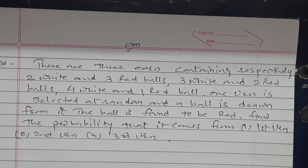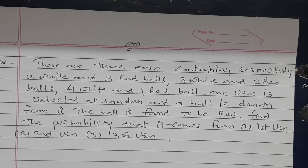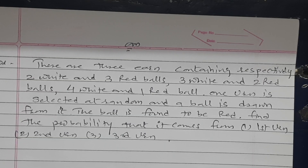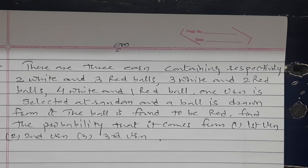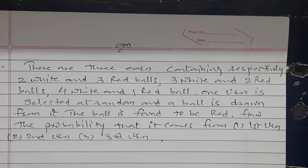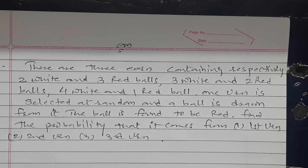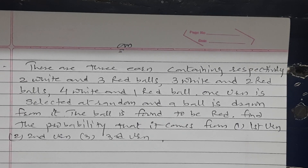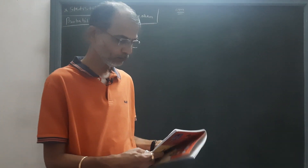Hello students, welcome to YouTube channel Sun Academy. In this lecture we are going to solve a question of probability in statistics using Bayes' theorem. The given question is: there are three urns containing respectively two white and three red balls, three white and two red balls, four white and one red ball. One urn is selected at random and a ball is drawn from it. The ball is found to be red. Find the probability that it comes from the first, second, and third urn.